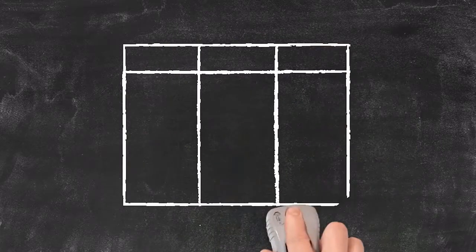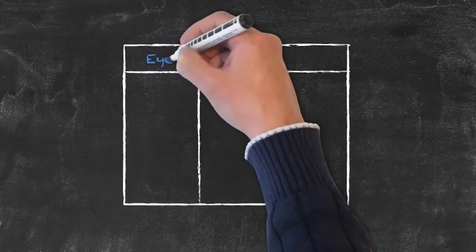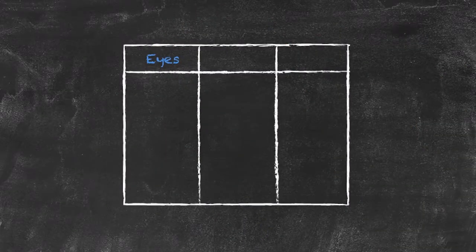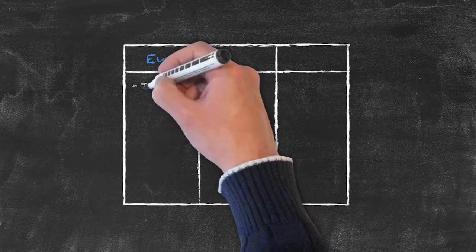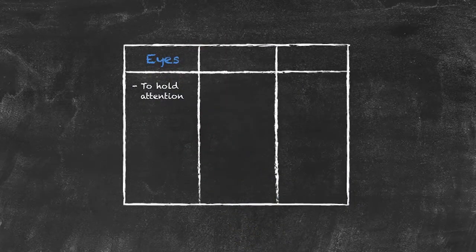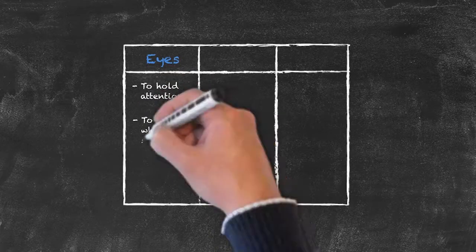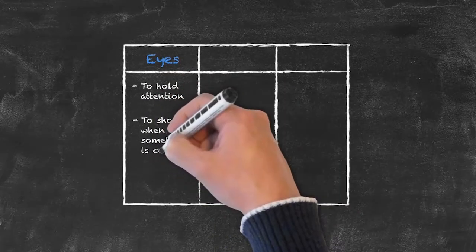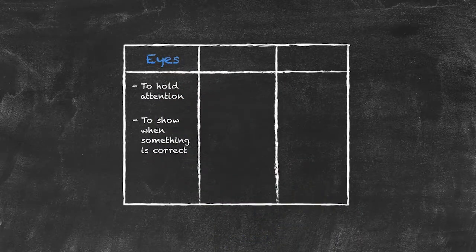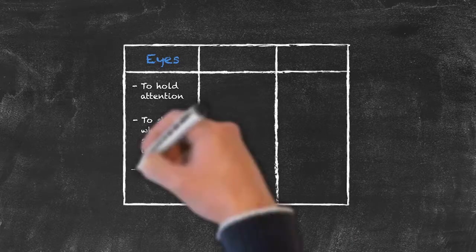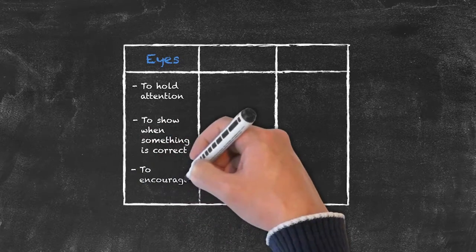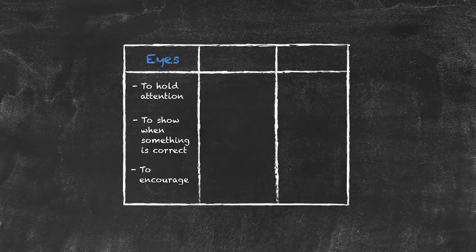Starting with our eyes, the eyes can be used in a number of ways and they can certainly be used to hold attention. The eyes can be used to show when something is correct, and they can also be used to give encouragement to students and indeed to dissuade.